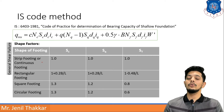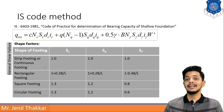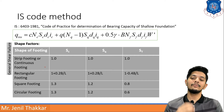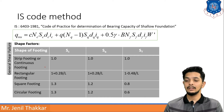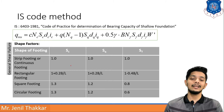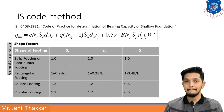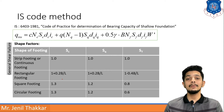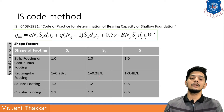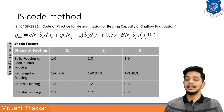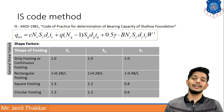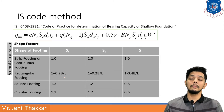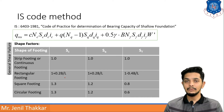For shape factors Sc, Sq, and Sγ, the IS Code provides different values for different footing geometries. For a strip or continuous footing, Sc = Sq = Sγ = 1. For a rectangular footing, a formula is given involving the ratio B/L. For square and circular footings, fixed values such as 1.3 and 1.2 are assigned. These values must be remembered or referred to from the IS Code table.